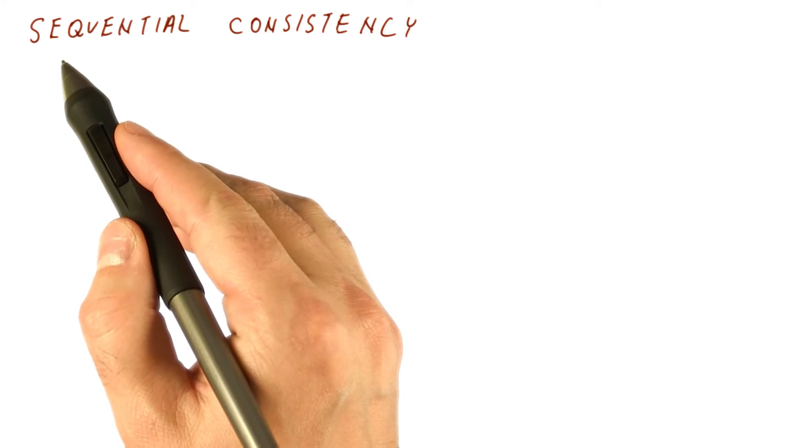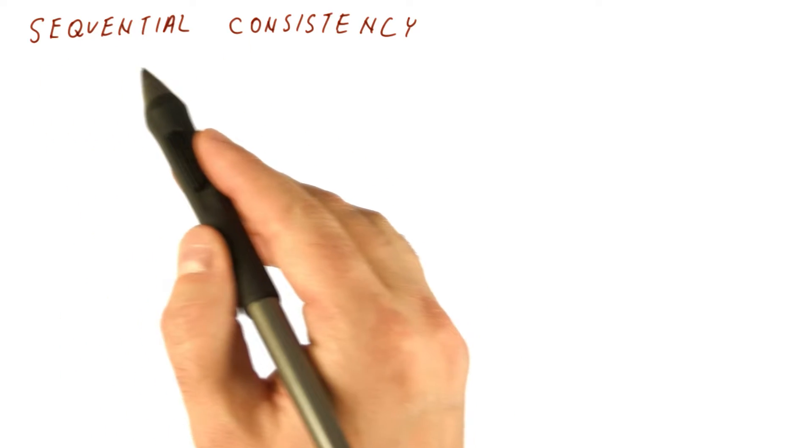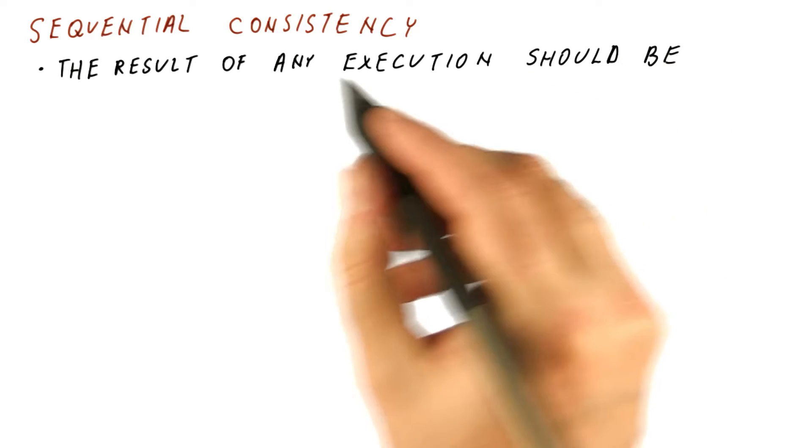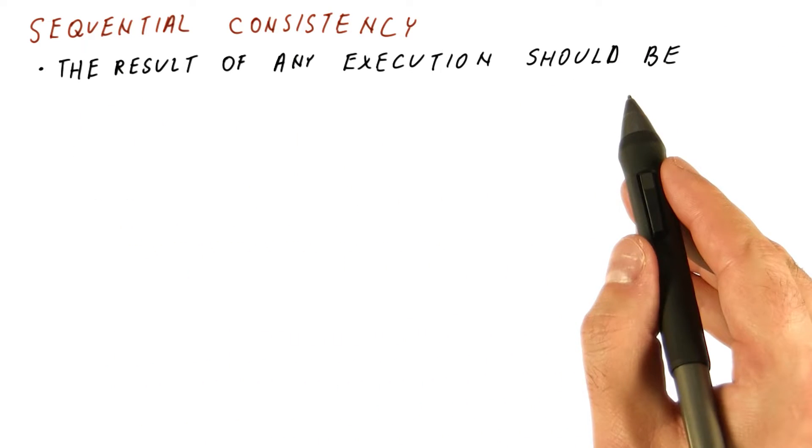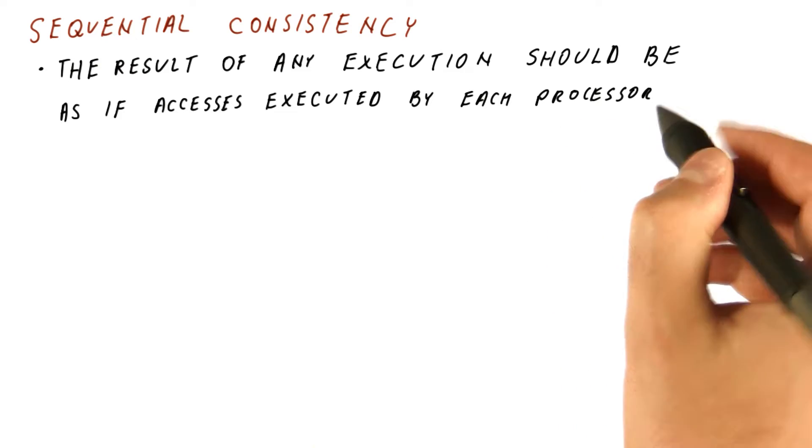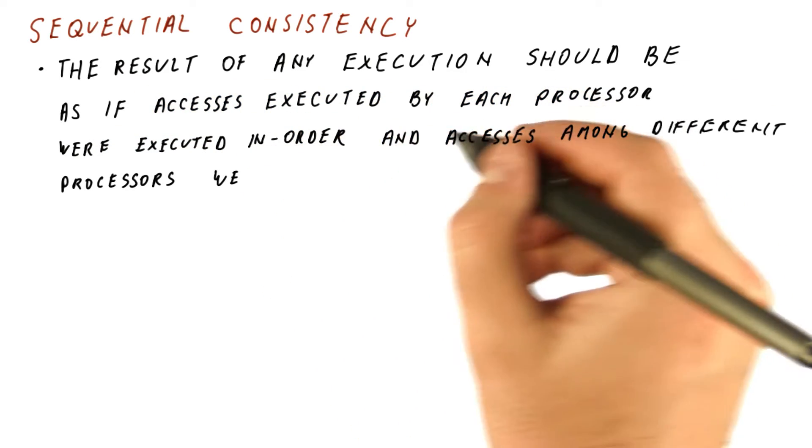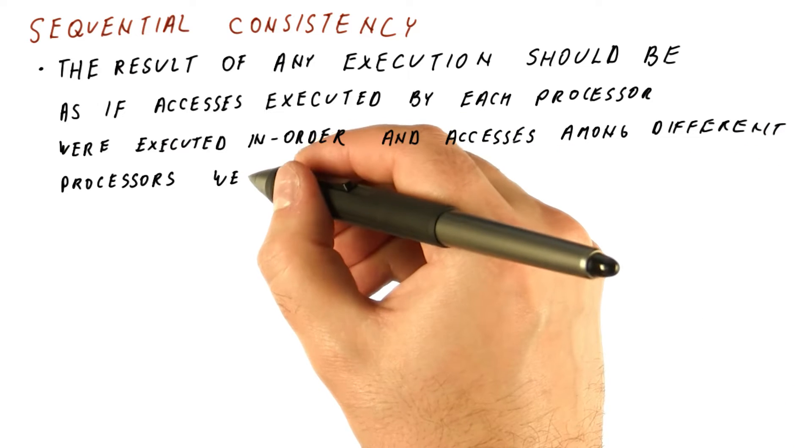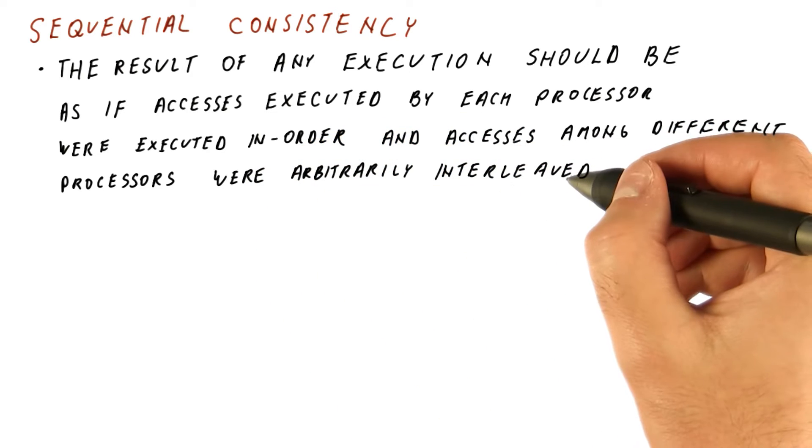For programmers, the most natural type of consistency is called sequential consistency. It says that the result of any execution should be as if accesses executed by each processor were executed in order and accesses among different processors were arbitrarily interleaved.